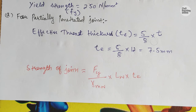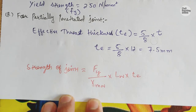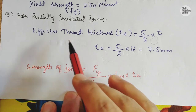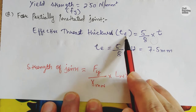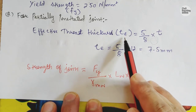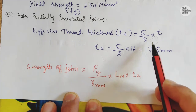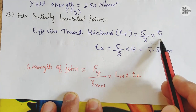After reviewing the given data, we note the yield strength of FE 410 steel is 250 Newton per mm square. Now we go to the first part: partially penetrated joint. The joint penetration is partial, meaning the weld is not through the full thickness — only partial thickness. Effective throat thickness is denoted Te.